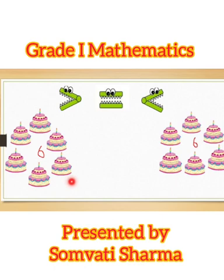Now here you can see 6 cakes. Here also 6 cakes. Means both are equal. So the alligator gets confused and his face remains same. So 6 equals to 6.